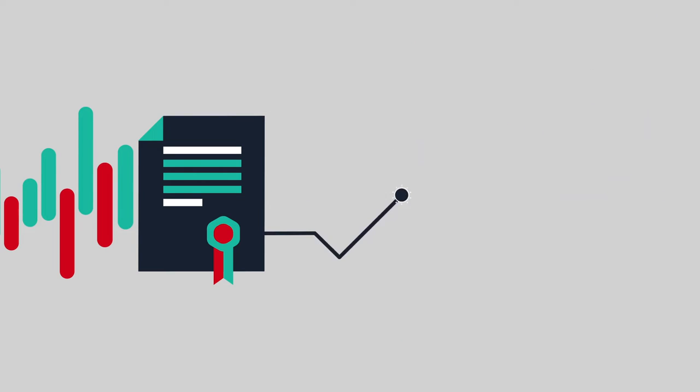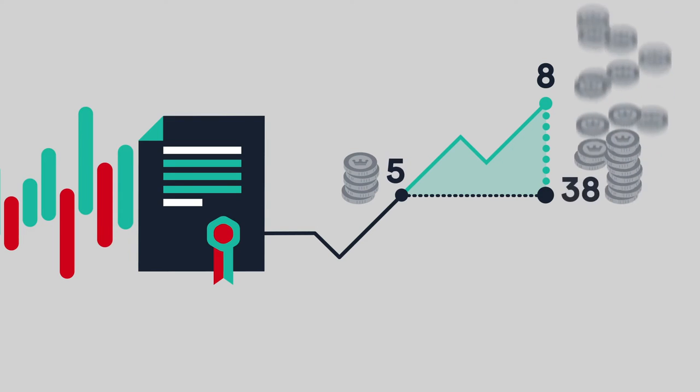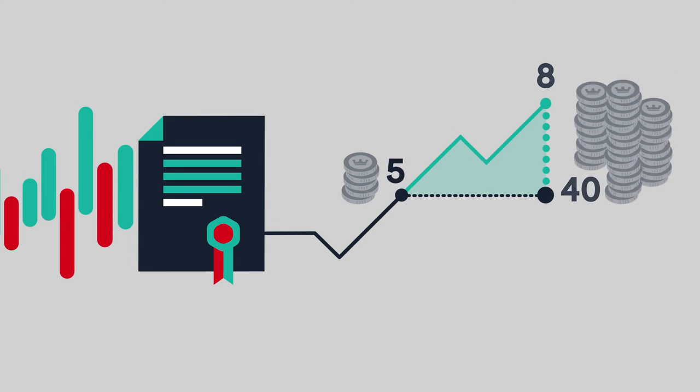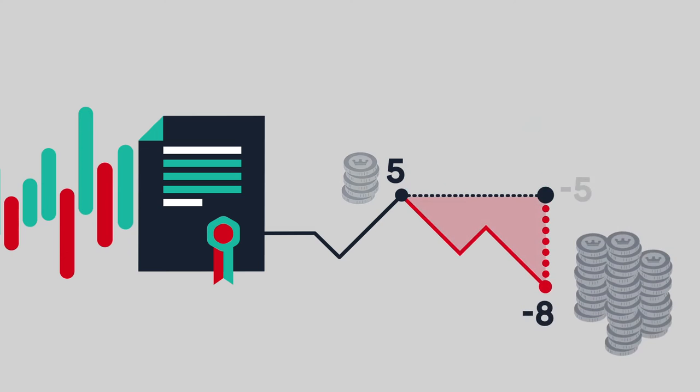Your profit or loss is based on the difference between the price you enter at and the price you exit at. The more points the market moves in your chosen direction, the more profit you make. This difference multiplied by your stake size equals your profit. If the market moves in the opposite direction, you will make a loss.